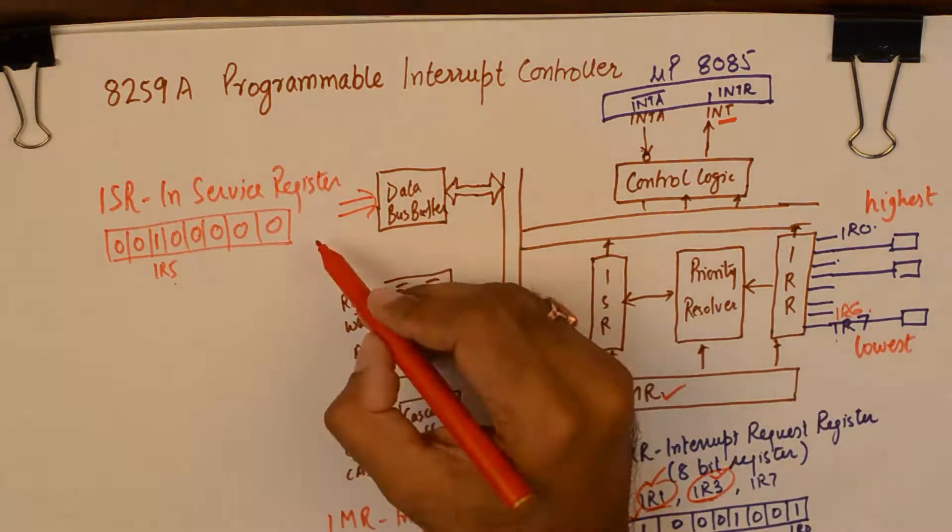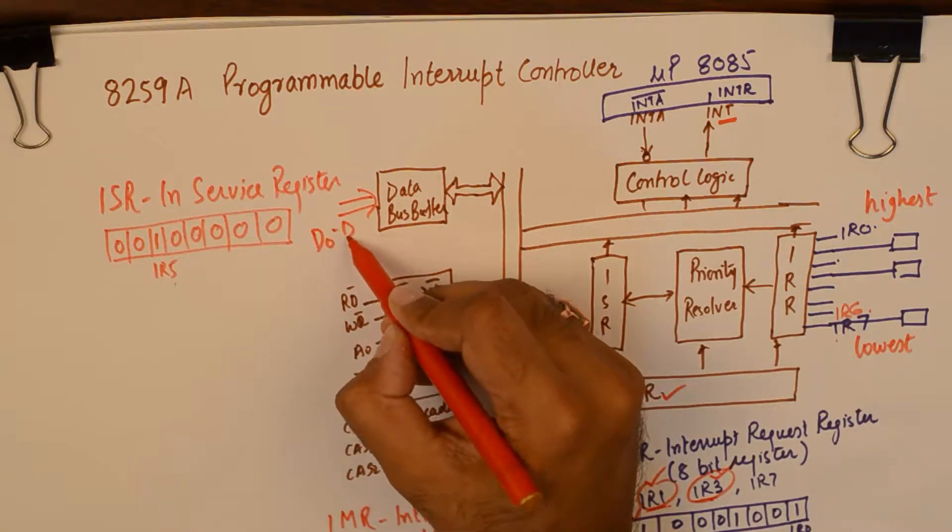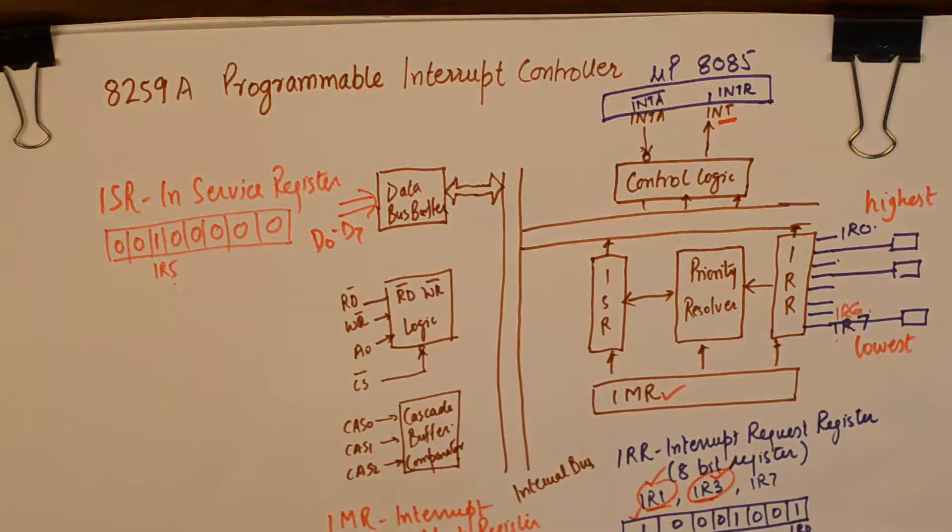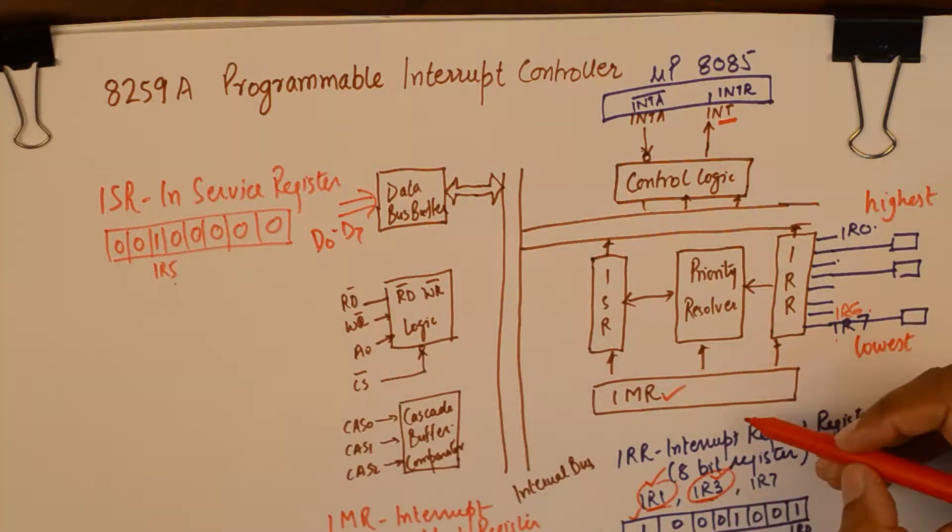And all the data transfer happens through this data bus buffer. Of course the D0 to D7 pin is being used for that.